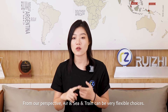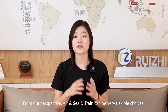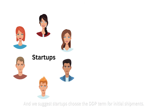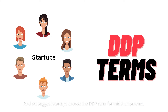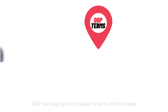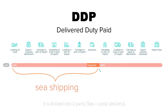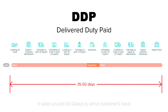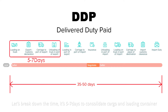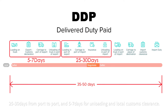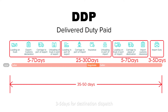From our perspective, LCL and train can be very flexible choices, and we suggest startups choose the DDP term for initial shipments. DDP sea shipping is very popular in North America. It's divided into two parts: sea and local delivery. It takes around 35 to 50 days to arrive at the customer's hand. Let's break down the time: 5 to 7 days to consolidate cargo and load the container, 25 to 30 days from port to port, and 5 to 7 days for unloading and local customs, then 3 to 5 days for destination dispatch.